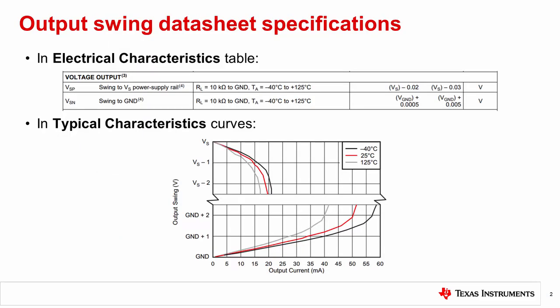Output swing is a common electrical specification found in the datasheet of a typical current sense amplifier, or CSA for short. There are usually two parameters listed to describe a device's swing to rail characteristics. The first is swing to power supply, or swing to VS, and the second is swing to ground.